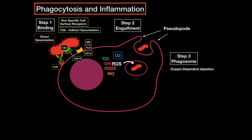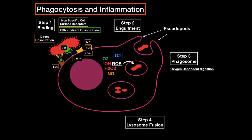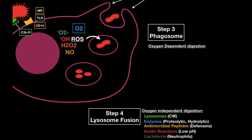The next step is lysosome fusion, where we have a lysosome in a vesicle that goes next to the phagosome, fuses with it to become a phagolysosome, and then breaks it down into small peptides. This is called the oxygen-independent mechanism. An example is lysozyme, which breaks down cell walls. It can also release proteolytic or hydrolytic enzymes, antimicrobial peptides like defensins, lower the pH, or release lactoferrin in the case of a neutrophil. Different phagocytes can release different things.